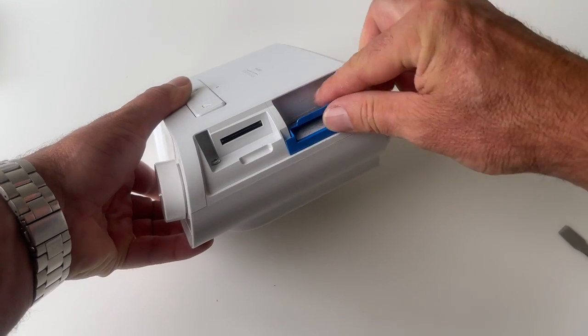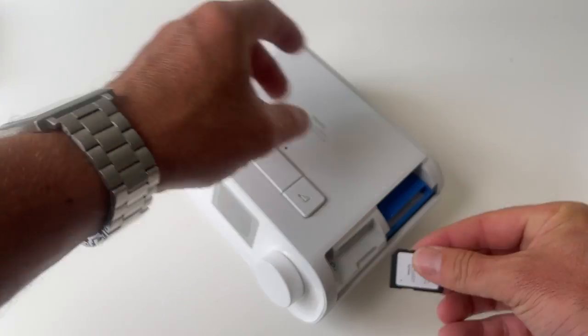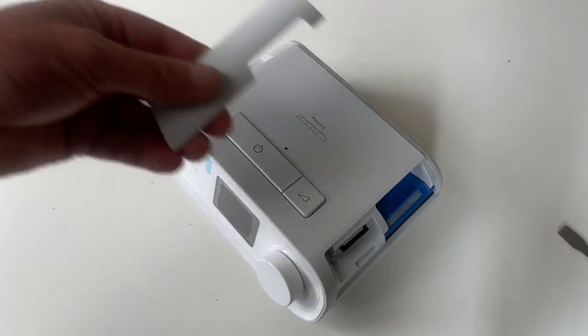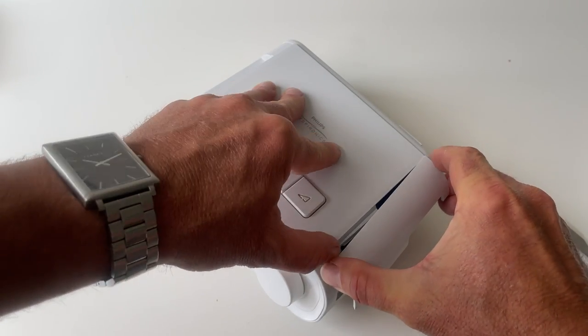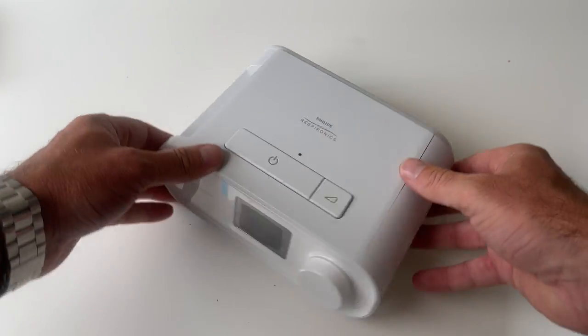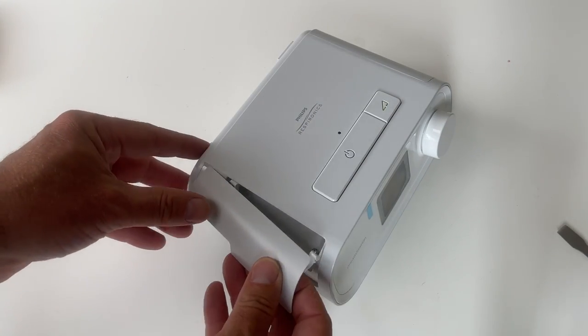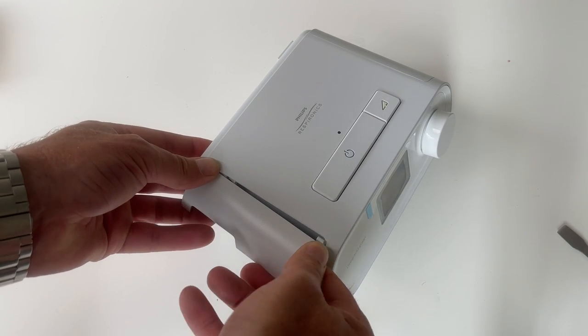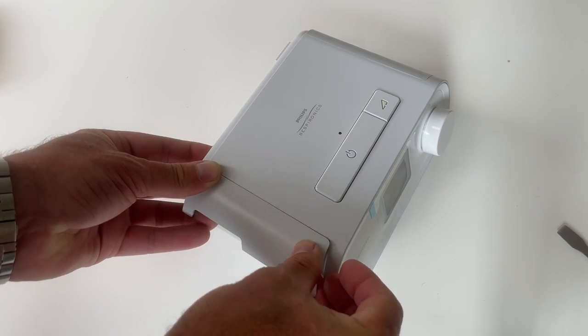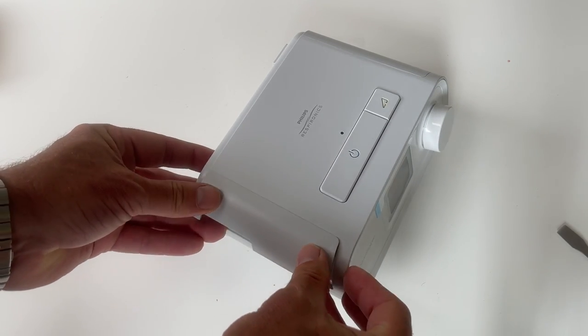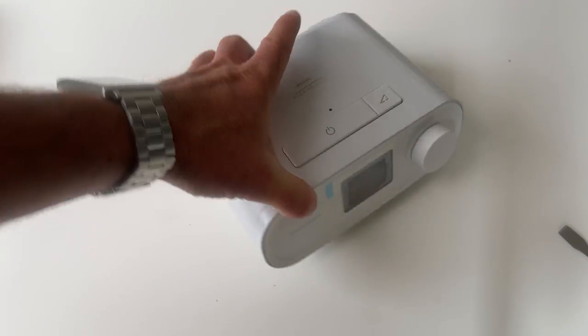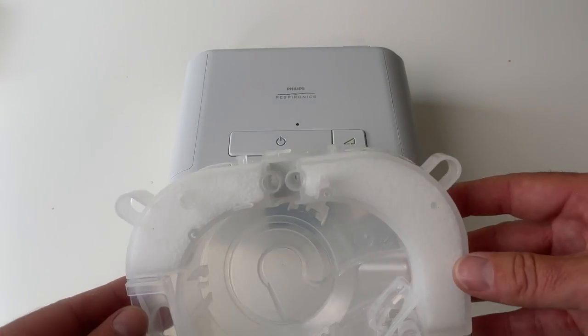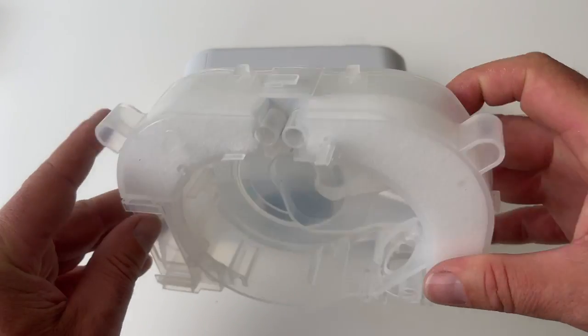Filter back in the side. SD card back in the side. Covers back on the same way you took them off. Just sort of bend them in, put one side in first. And then just sort of bend the other side in. And there it is. The old chamber has been taken out. And the new chamber is in.